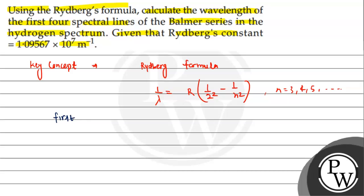So first, for the first four wavelengths, we will calculate for N equals 3, N equals 4, N equals 5, and N equals 6. We will put these values and solve.